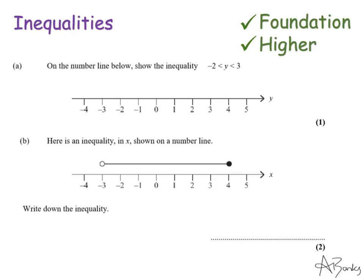I've got to think about how I'm going to represent this on my number line. It can be anything between minus two and three but can't include those two endpoints. So I draw an open circle where minus two is to show it can't be minus two, then draw a line going all the way up to three, and because it can't be three I draw an open circle at three as well.